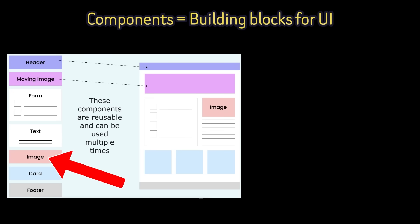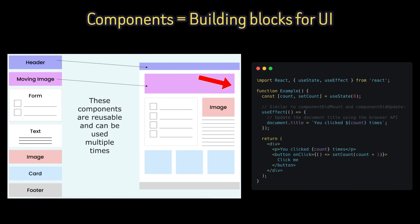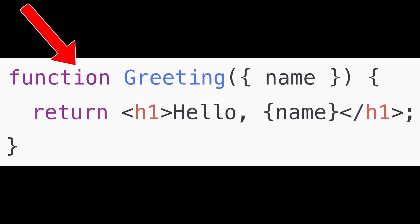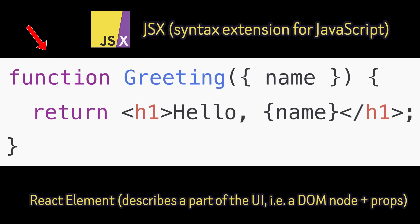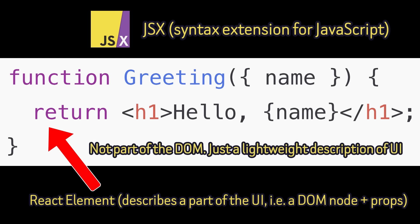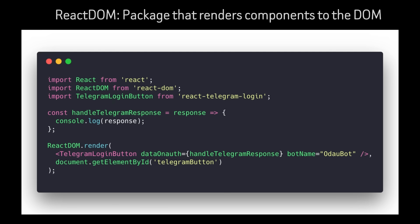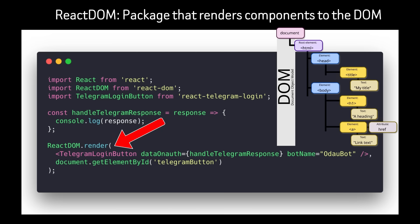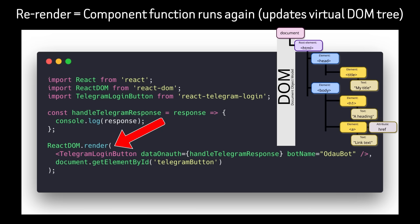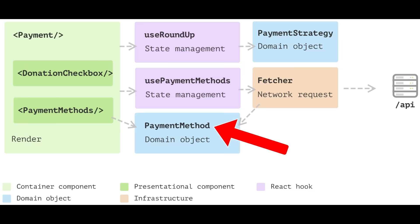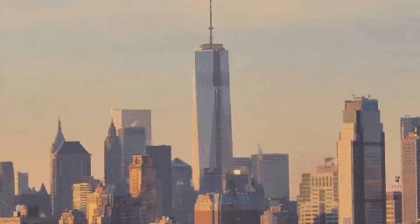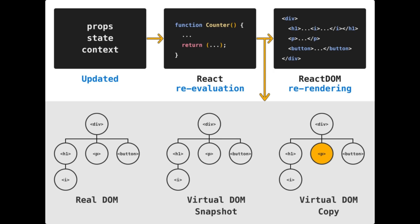A React component is not a template, class, or widget in the traditional sense. A component is an executable function that returns a description of UI. The greeting function, written in JSX, is a blueprint for a React component that returns a React element. When React renders this component, it calls the function. The returned value is not the DOM — it is a React element, a lightweight JavaScript object describing what the UI should be, i.e. a virtual DOM node. React then uses React DOM to efficiently render it into the browser's actual DOM. If the component renders again, the function is simply called again with new inputs. This has several important consequences: components are easy to reason about because they behave like normal functions; UI becomes naturally composable — complex interfaces are built by combining smaller components, just like functions calling other functions; and rendering becomes cheap because nothing is mutated during render. React is just building descriptions.